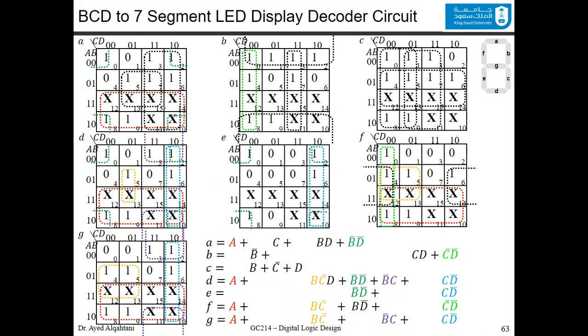If you fill all the Karnaugh maps, you can see that there are some common terms. For example, the red one here is common between A, D, F, and G. The light blue one is common between D, E, and G. This will help us when we draw the logic diagram.